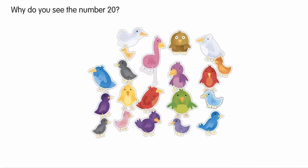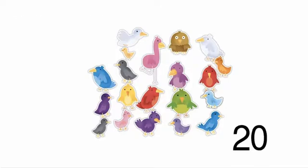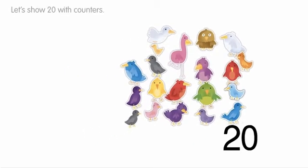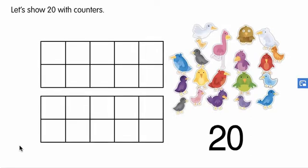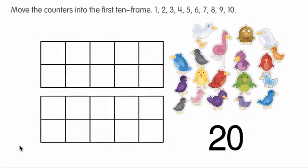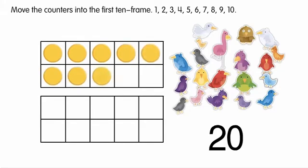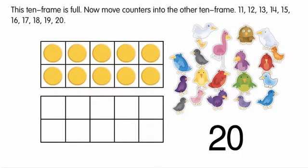Why do you see the number 20? There are 20 birds in all. Let's show 20 with counters. Move the counters into the first 10 frame. 1, 2, 3, 4, 5, 6, 7, 8, 9, 10. This 10 frame is full.